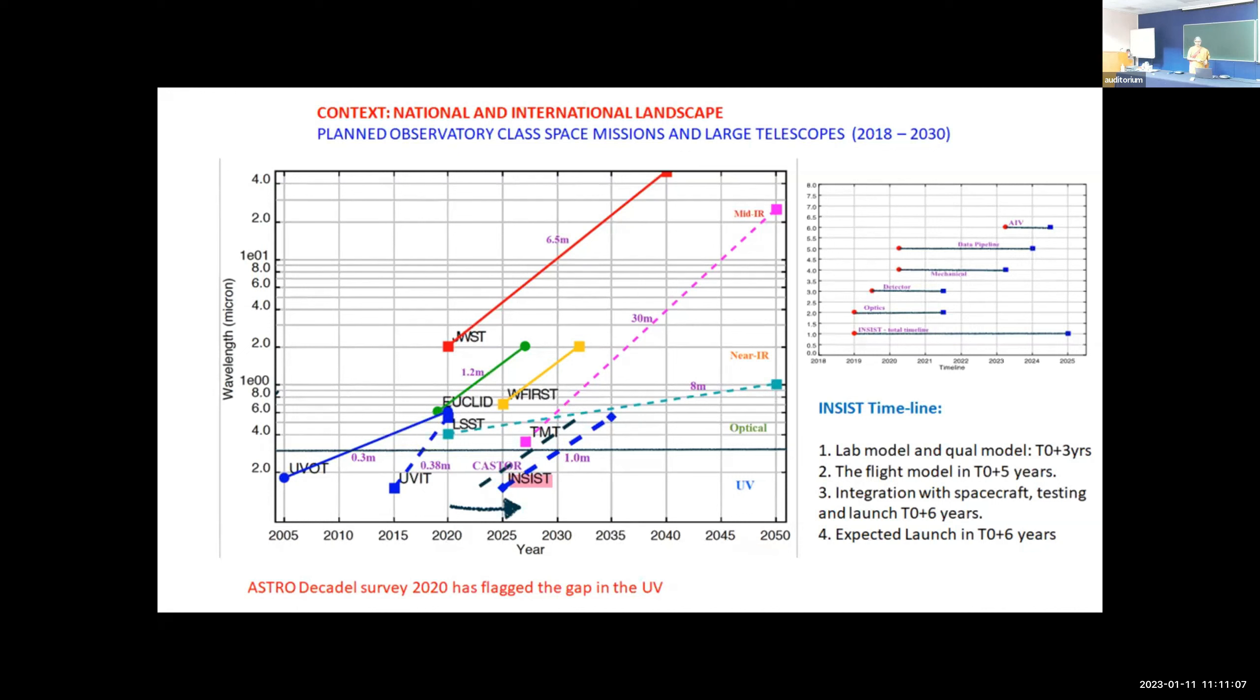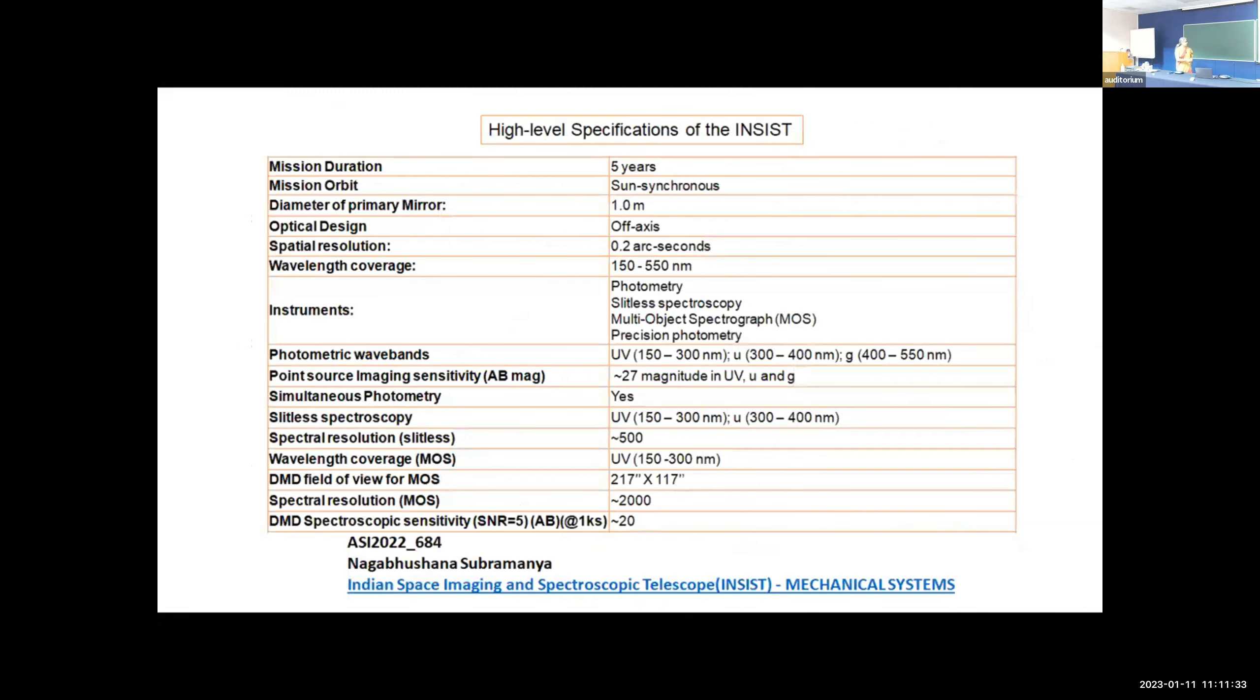The Astro Decadal Survey of 2020 actually flagged this gap in the UV. And suddenly you would see in the last couple of years a number of proposals for UV missions to fill this gap. And LUVOIR which has actually come up with its plan appeared a couple of days ago looking at a larger scale. So people thought that LUVOIR will come towards the end of 2030s but that's not going to happen. It's going to be pushed to the next decade. India is very nicely poised to actually make use of this opportunity because we have the capacity here, we have the know-how, and we are ready to go.